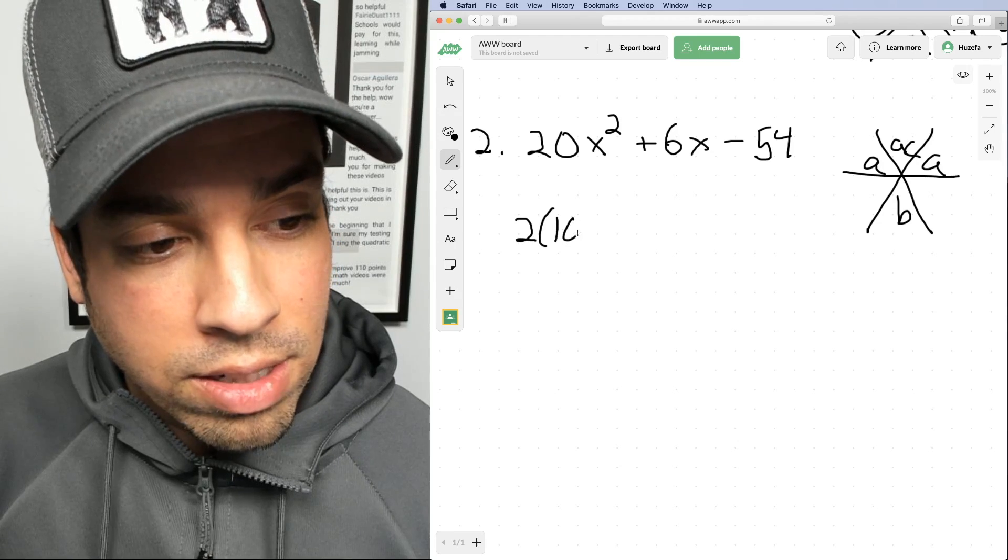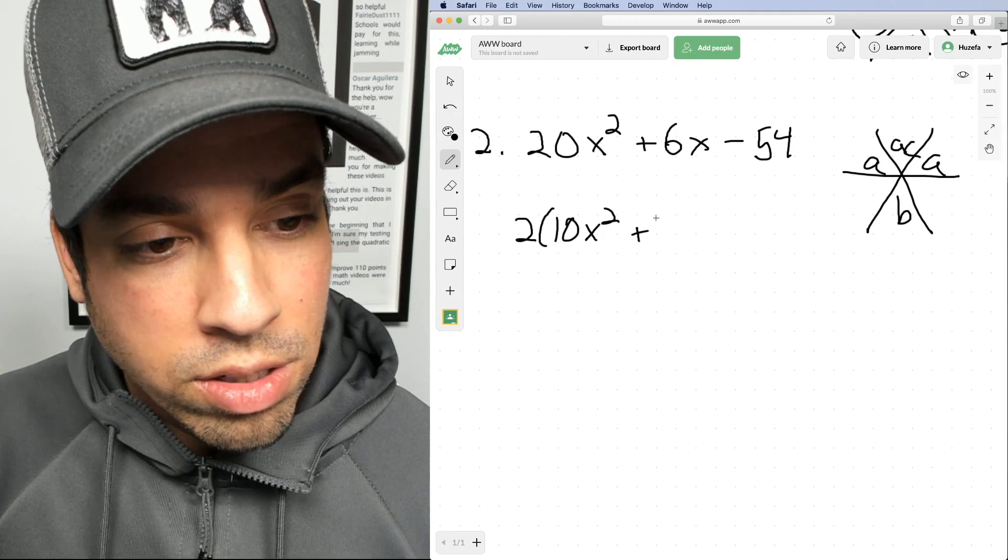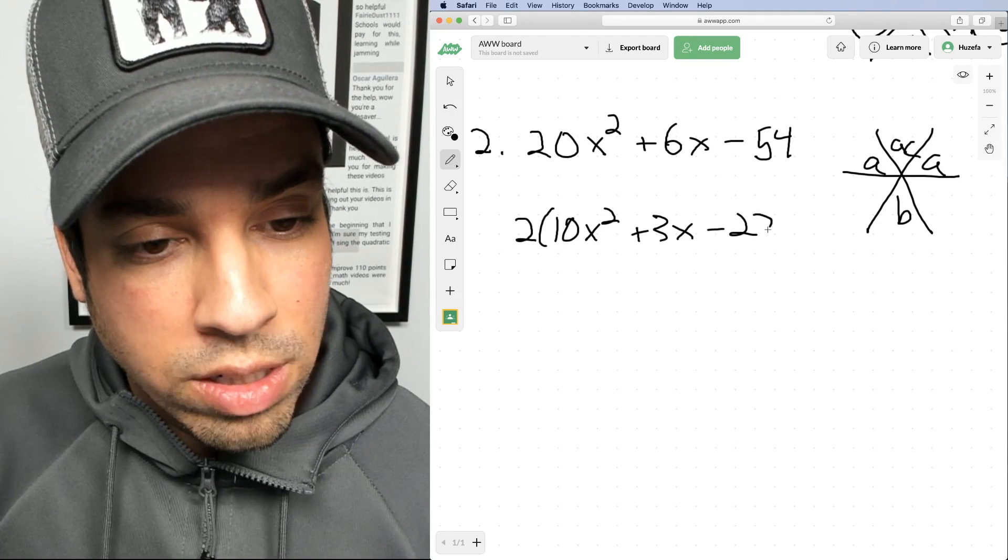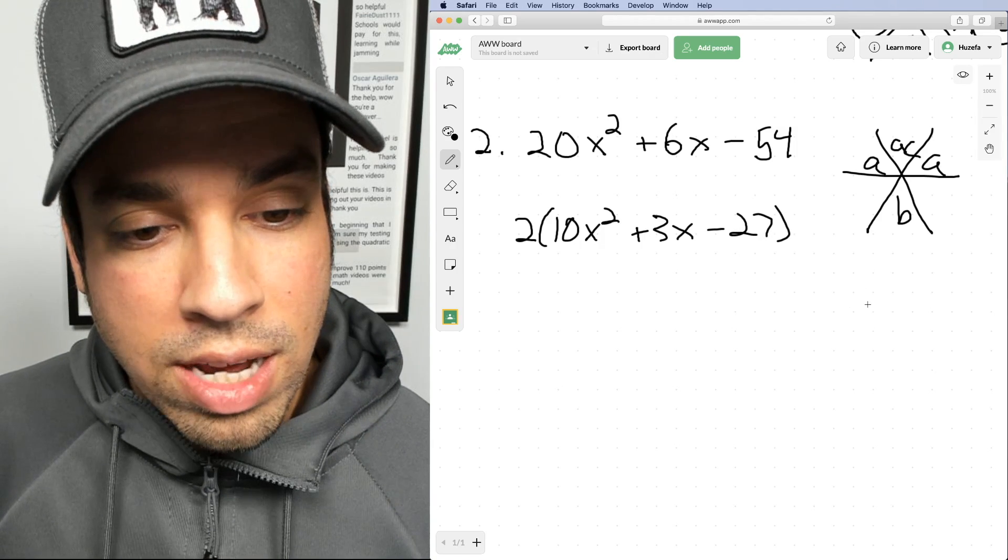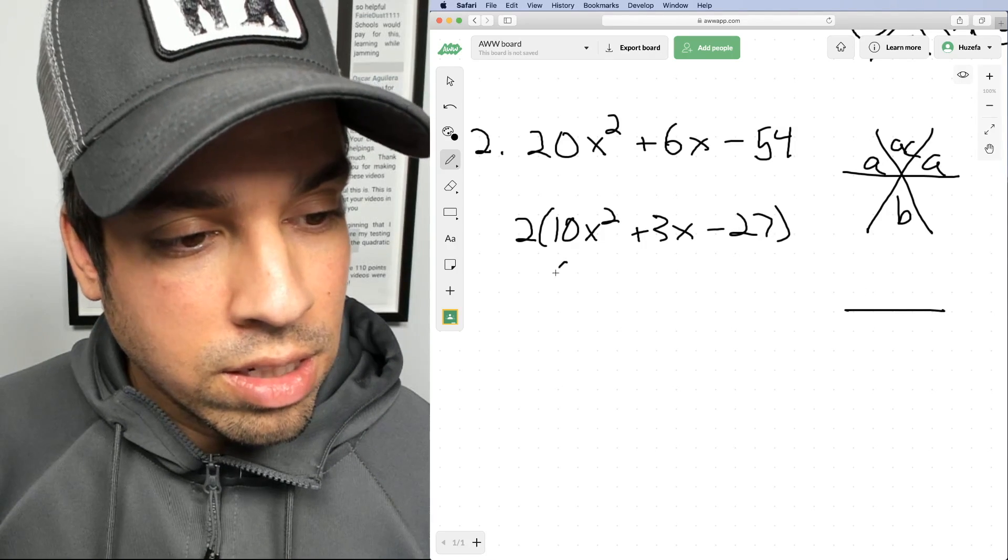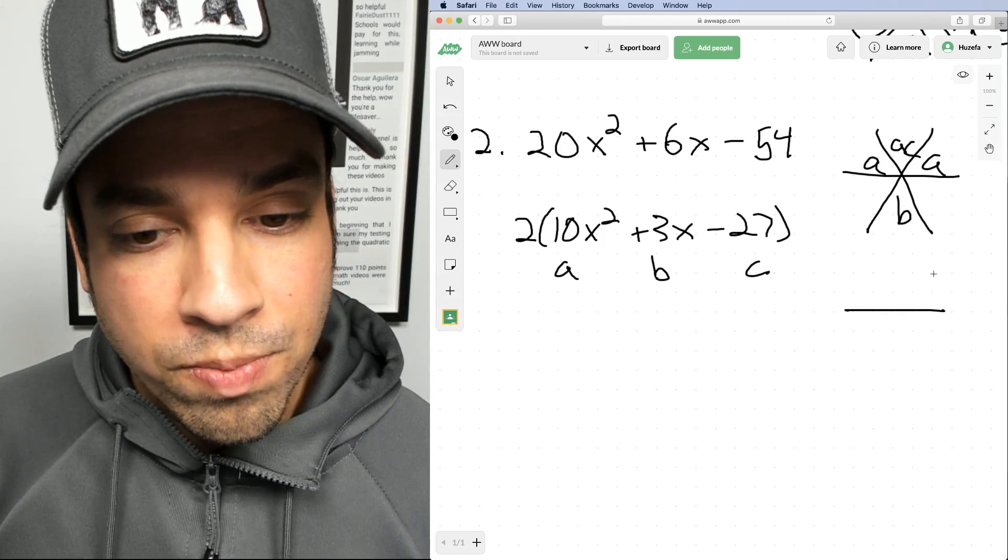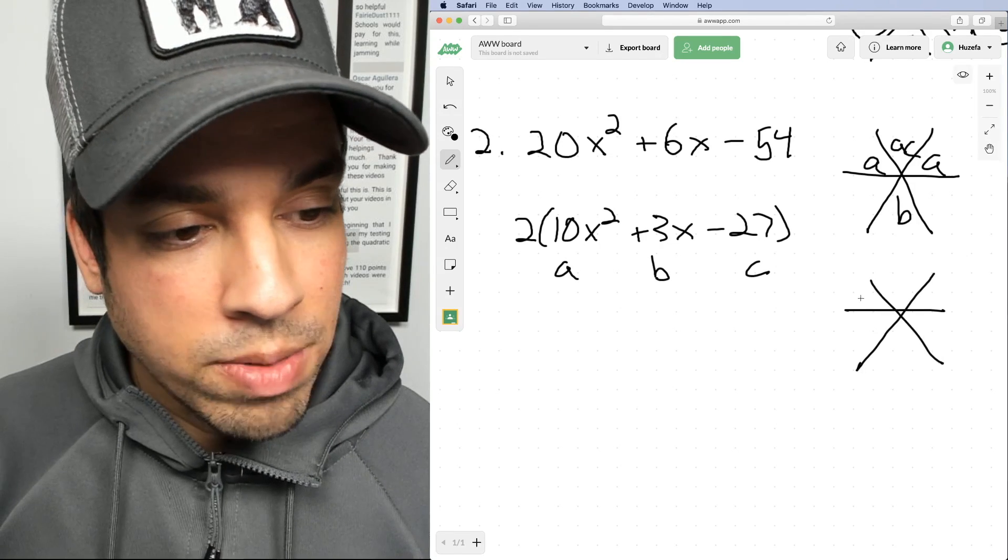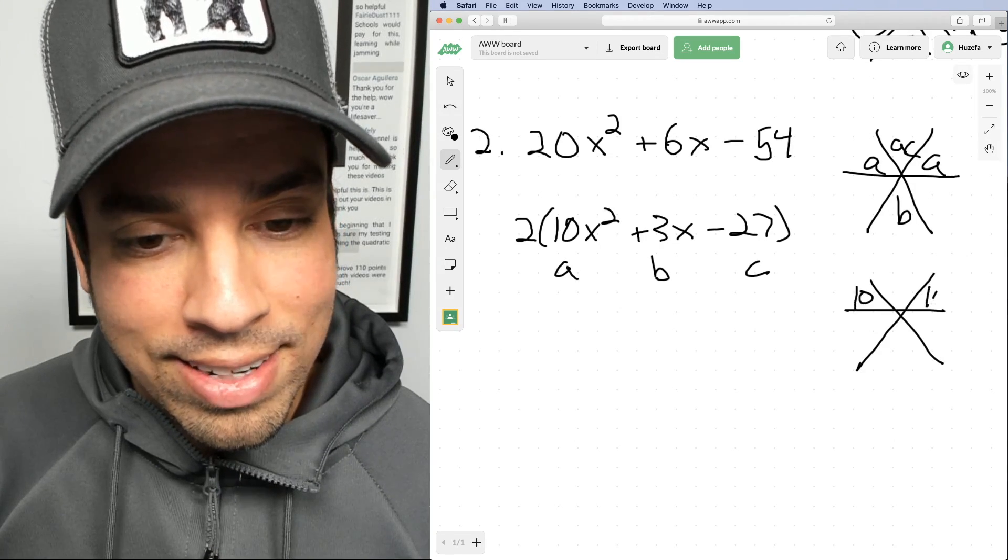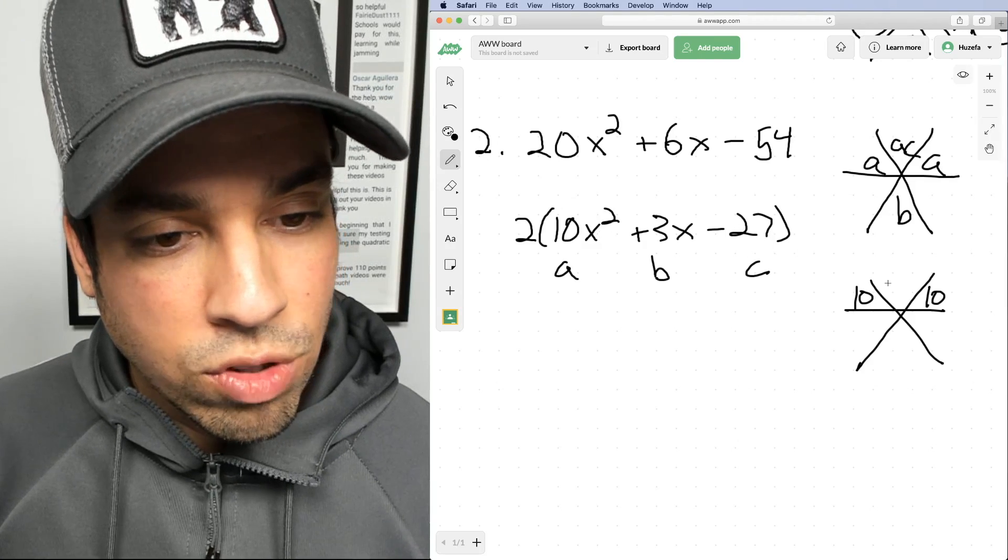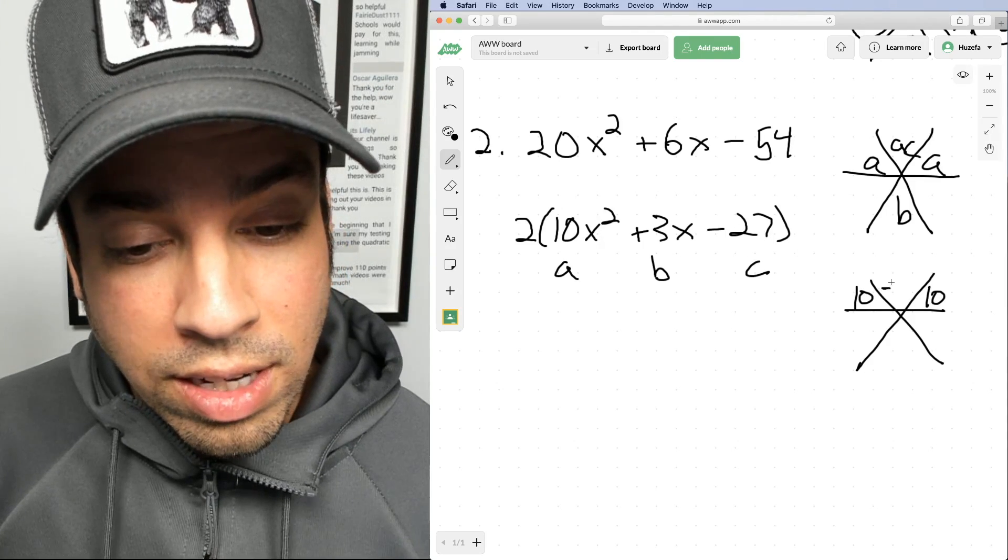I'm going to factor two out of everything. I've got 10X squared plus 3X minus 27. That's pretty good. Now let's use these. This is my A term, my B term, my C term. And now we're going to plug it into the star method. So again, we've got 10 and 10 here, 10 times negative 27 is negative 270, and then on the bottom is that three.